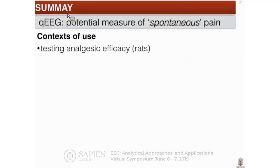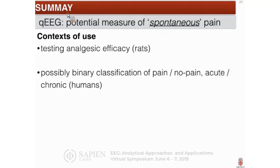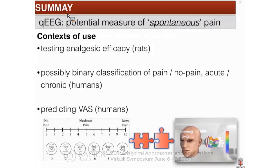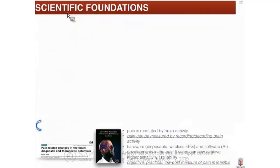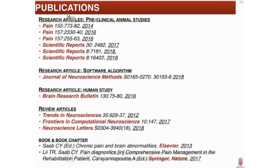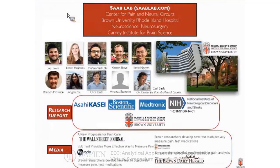In summary, using EEG to assess pain depends on the context of use. In animals, we have defined it as testing analgesic efficacy. In humans, it could be a classifier of pain versus no pain, acute versus chronic pain, and more broadly a platform for phenotyping different neurological conditions. There is also the opportunity to predict the VAS in humans without verbal reporting — although I want to emphasize that building a VAS predictor should not and is not going to replace the VAS as reported by patients, for various legal and ethical reasons. Here is a list of publications and the sponsors we'd like to thank. Thank you.